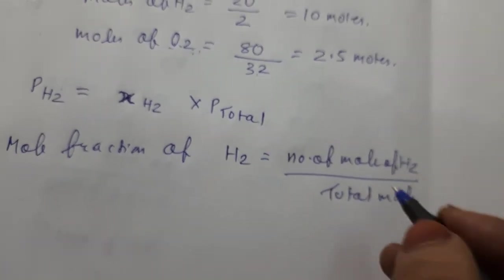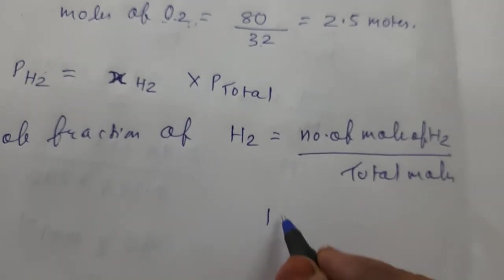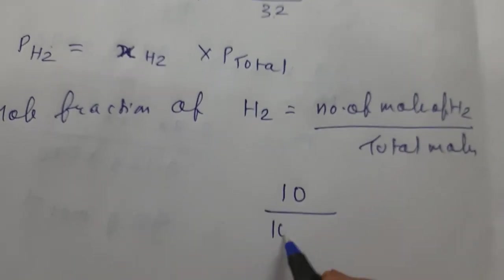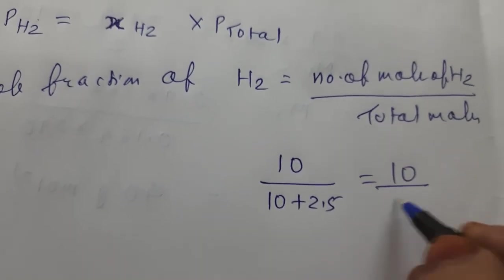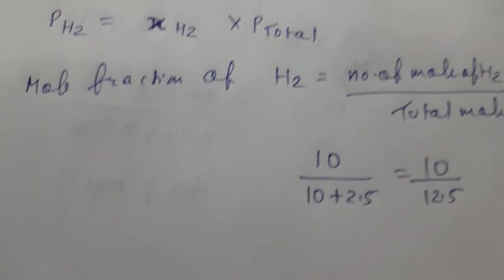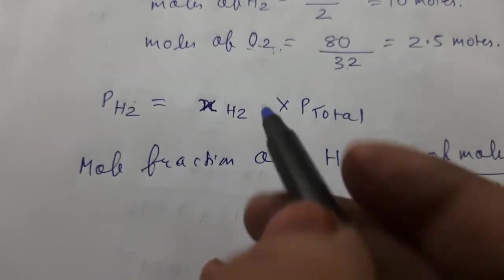Moles of H2 is how much? 10. So 10 divided by 10 plus 2.5, which is 10 divided by 12.5. This is our mole fraction of H2. So we will put it in this formula.